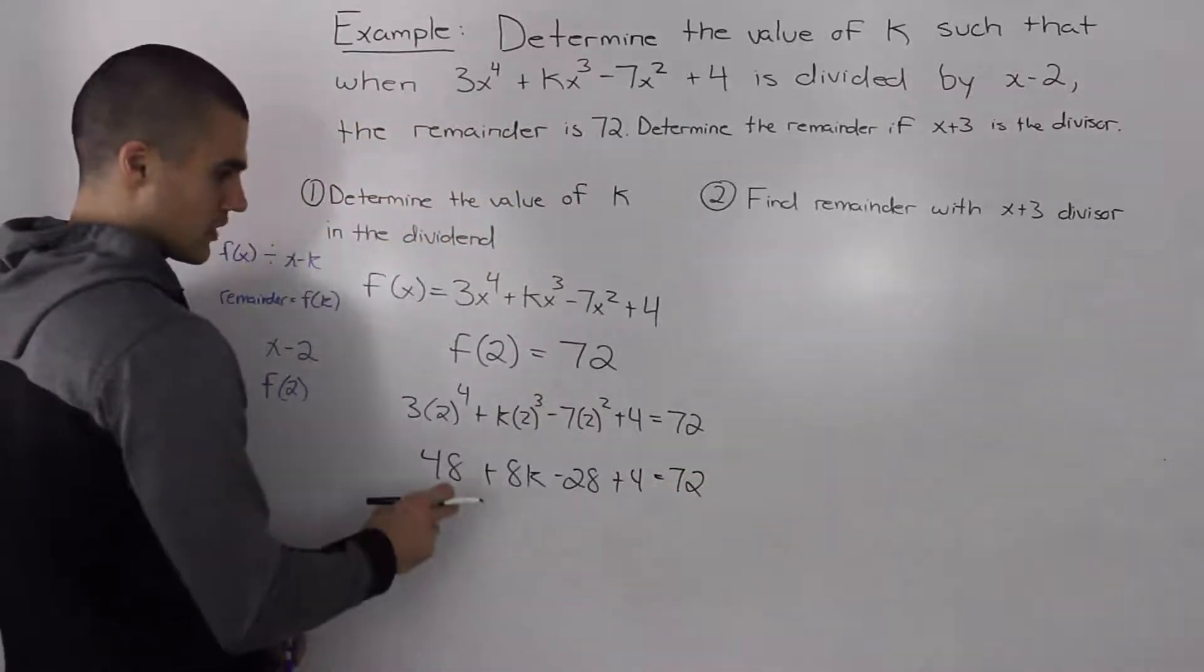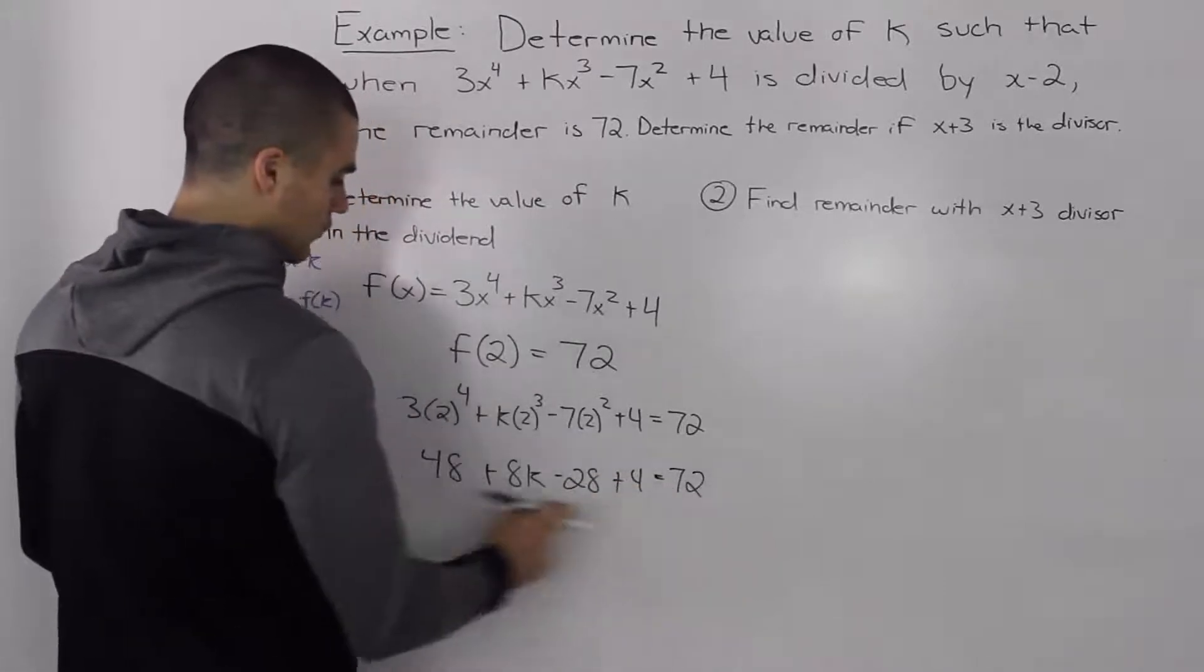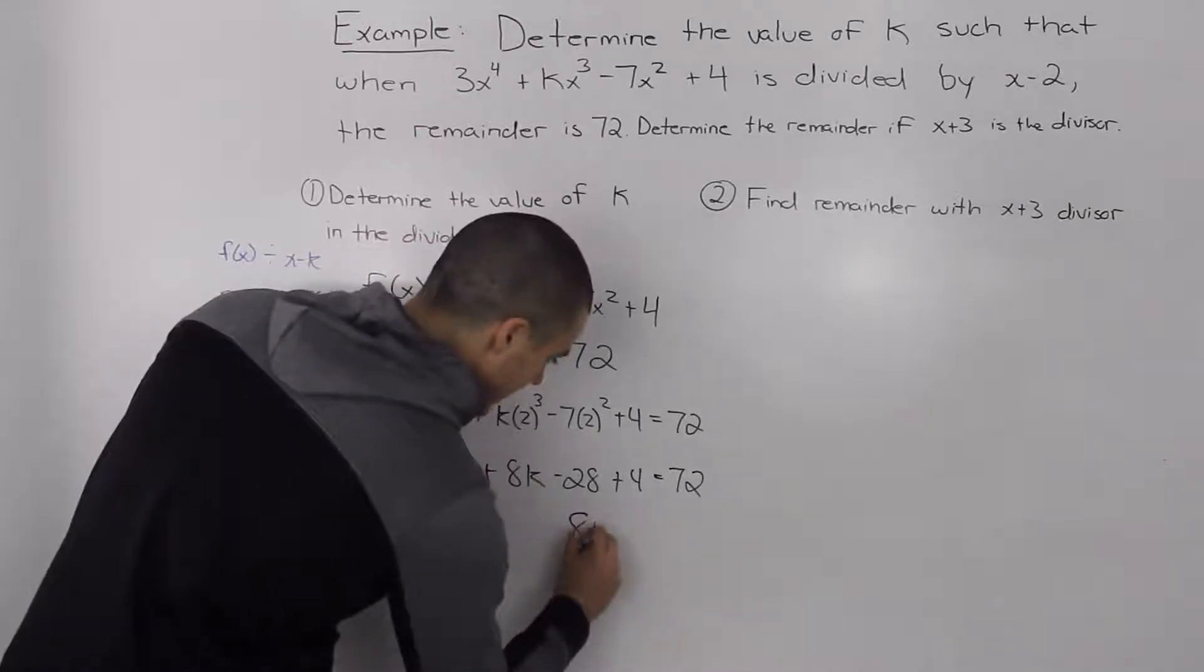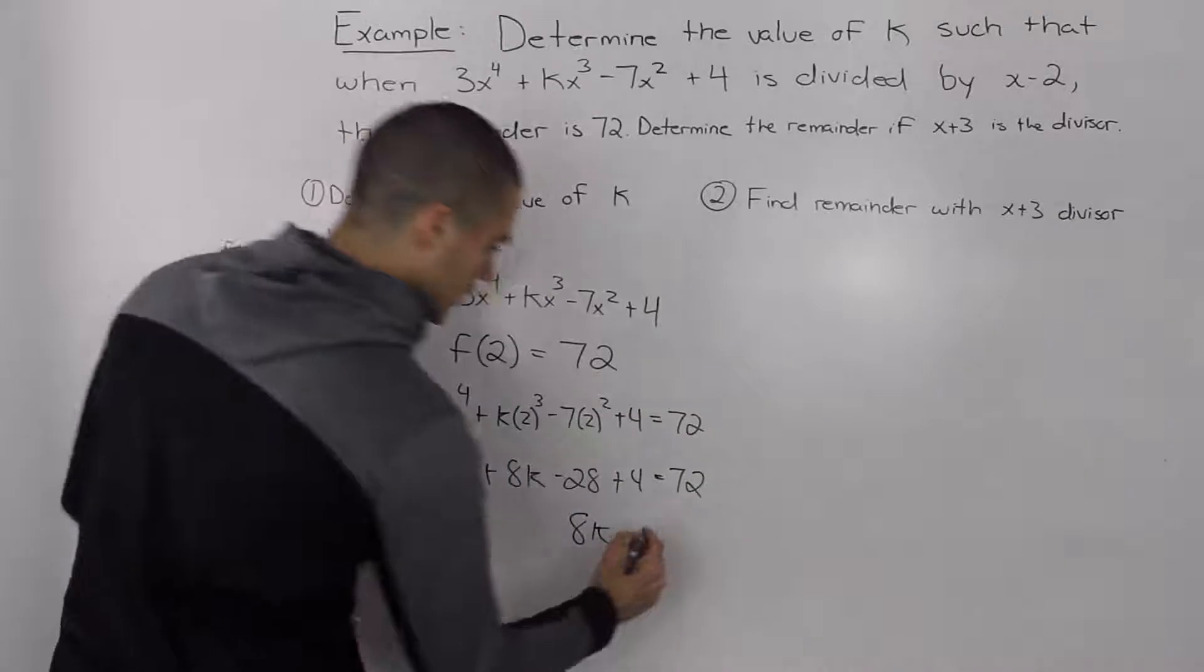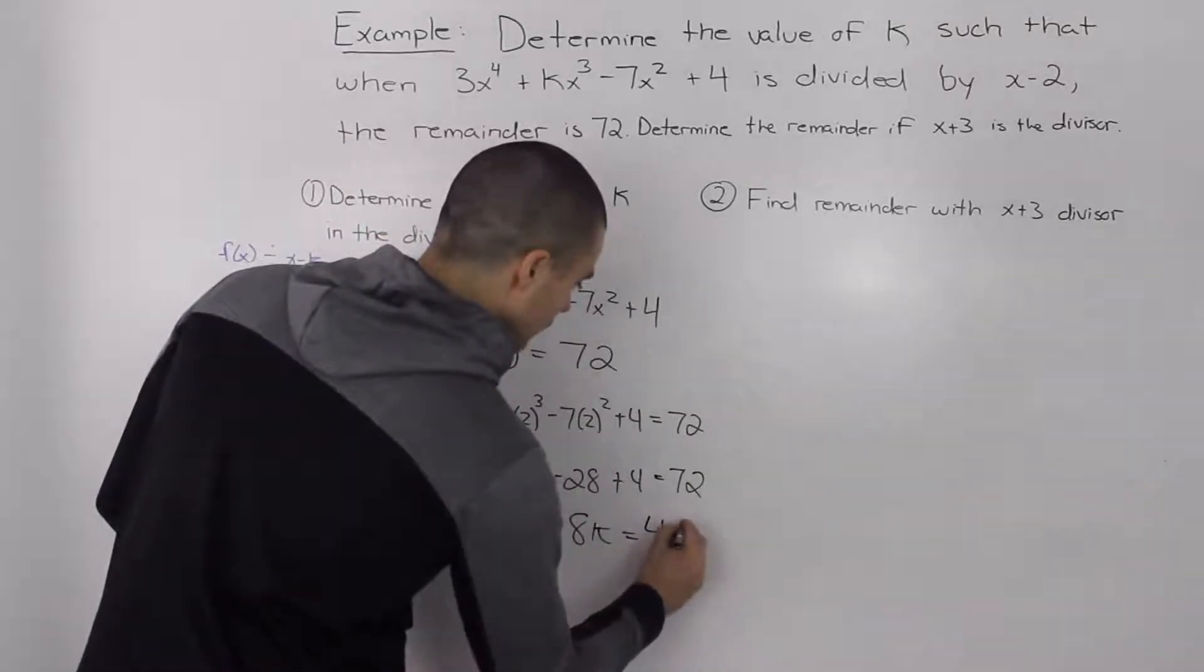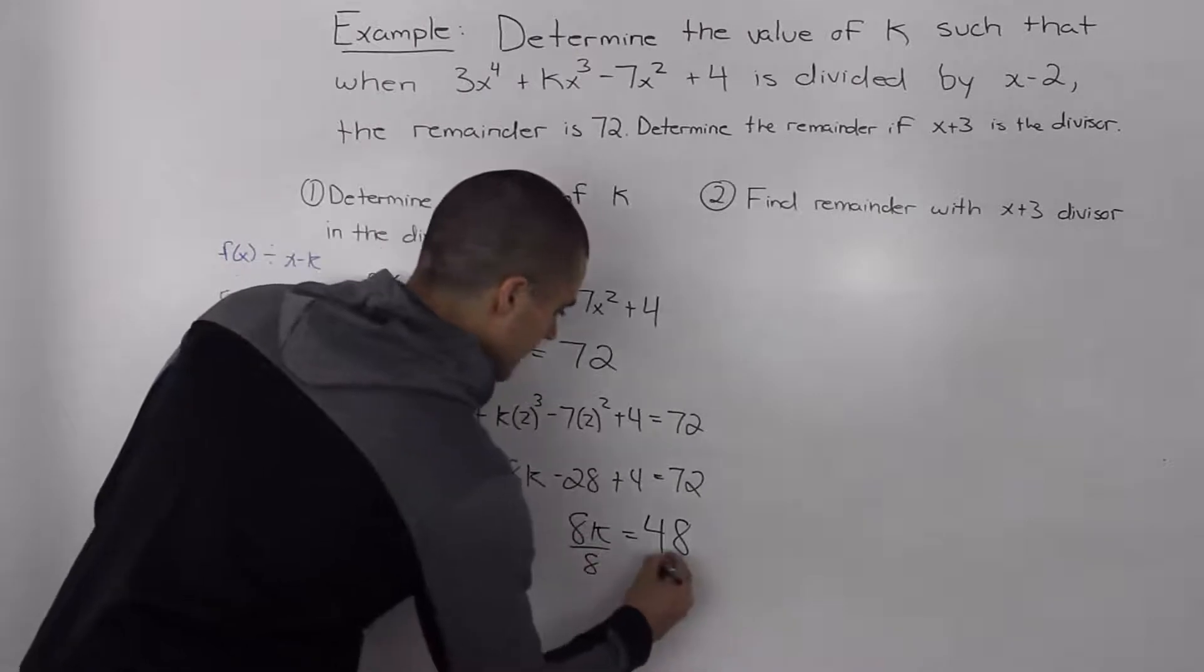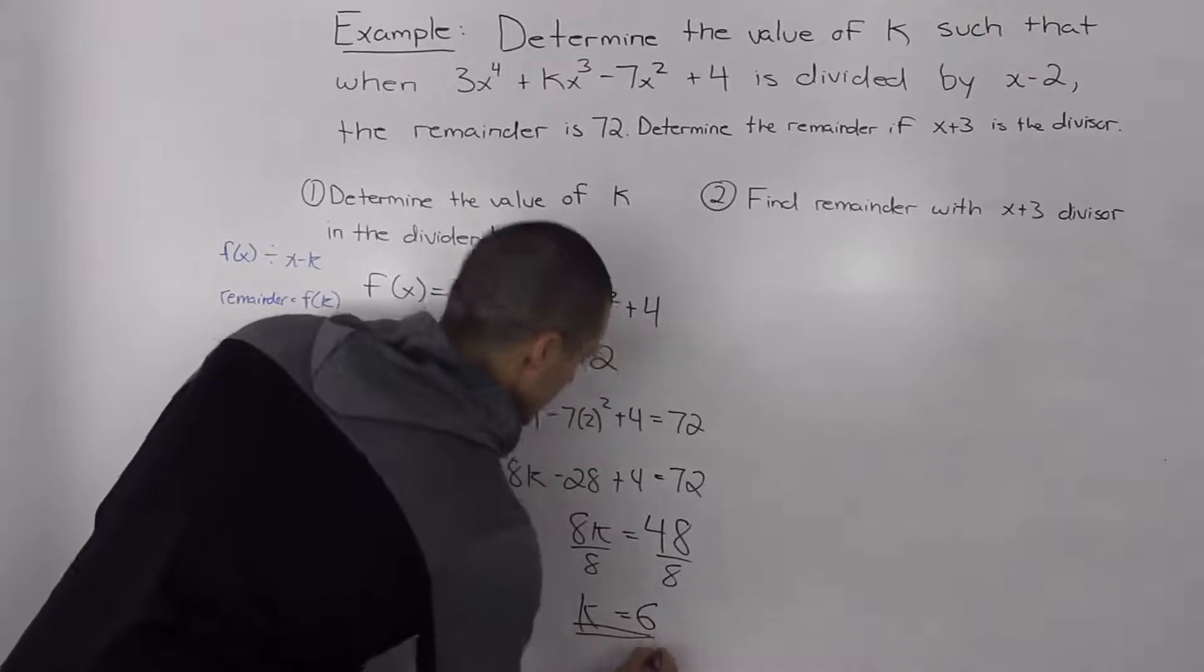Now if we bring the positive 4 over, the negative 28 over, and the 48 over, we are trying to isolate for the k value, we would have 8k equals, if you brought everything over, you would get a value of 48. And then just dividing both sides by 8 to isolate for the k value, we would get a k value of 6.